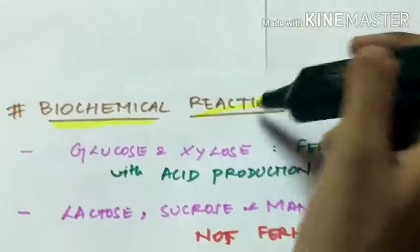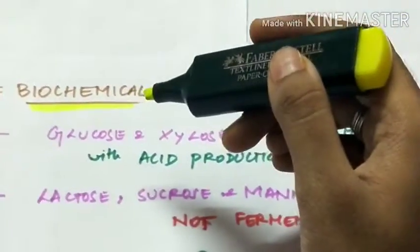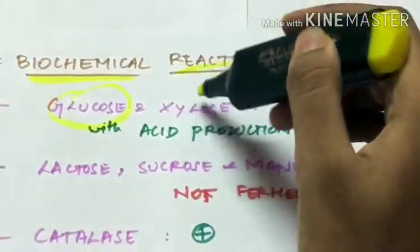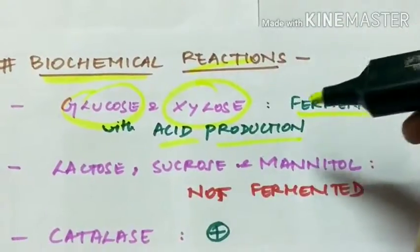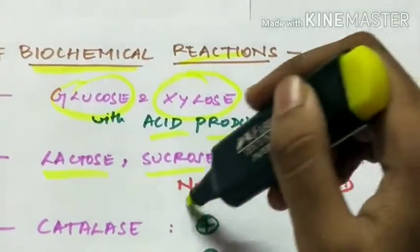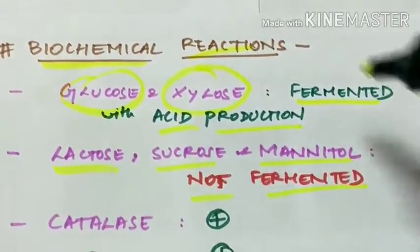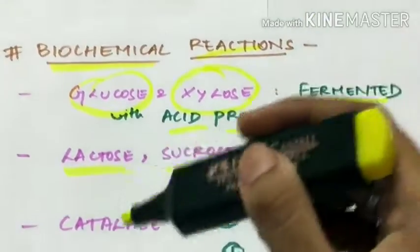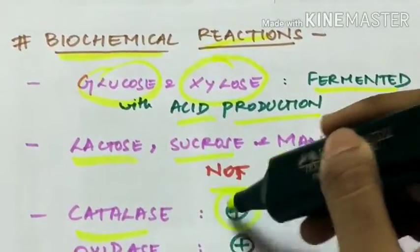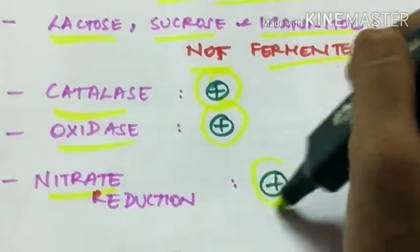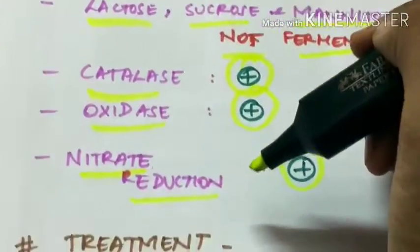Biochemical reactions. The Haemophilus influenzae ferments glucose and xylose with acid production but lactose, sucrose and mannitol are not fermented. So only glucose and xylose are fermented by Haemophilus influenzae. It shows catalase positive, oxidase positive and the nitrates are reduced to nitrites. So nitrate reduction is positive.